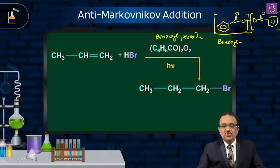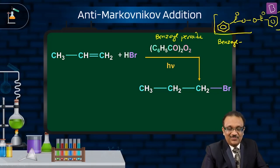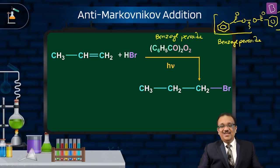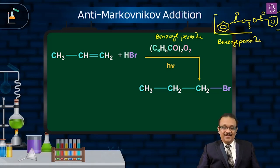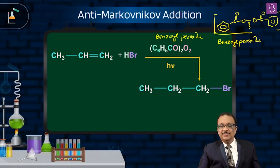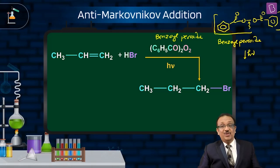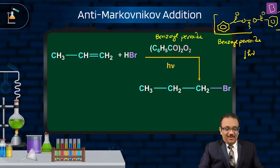Two benzoyl groups are joined together, and the O–O bond formed at the back — that is the peroxide linkage. So the name is benzoyl peroxide. Benzoyl peroxide is a peroxide.